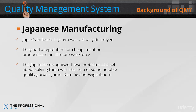At that time, Japan's industrial system was virtually destroyed, and it had a reputation for cheap imitation products and an illiterate workforce. The Japanese recognised these problems and set about solving them with the help of some notable quality gurus: Juran, Deming, and Feigenbaum.